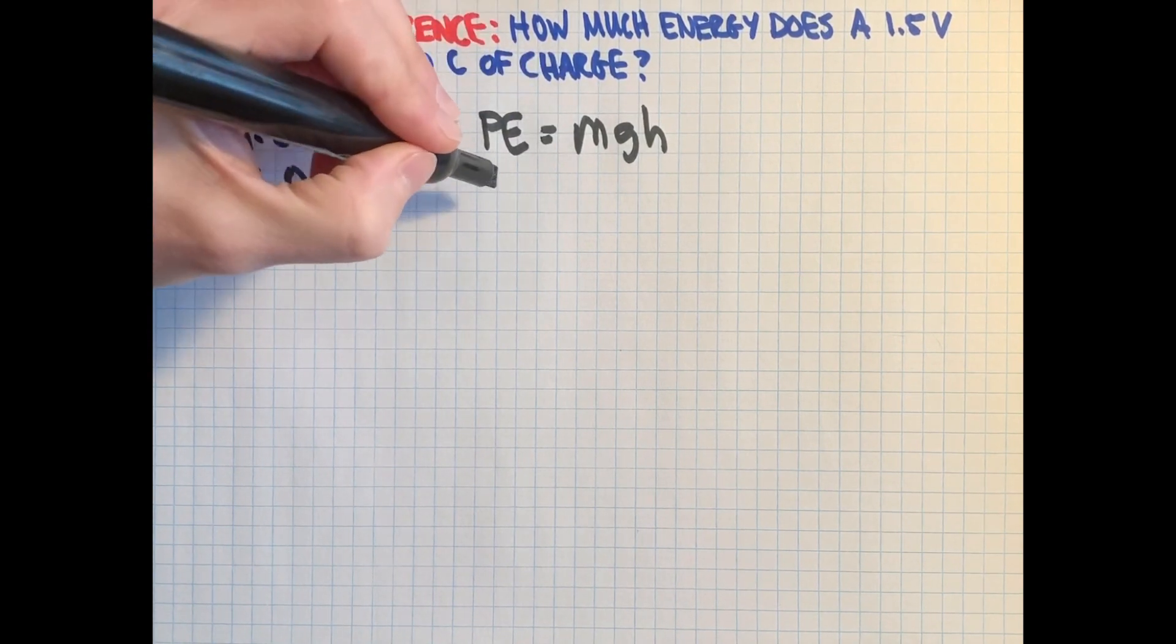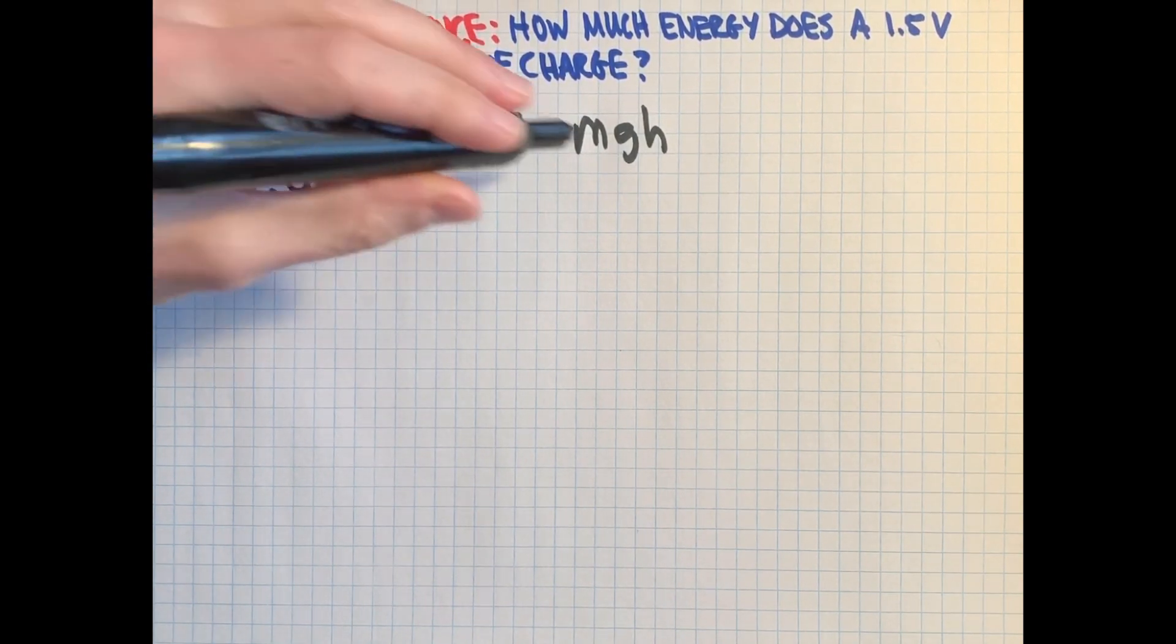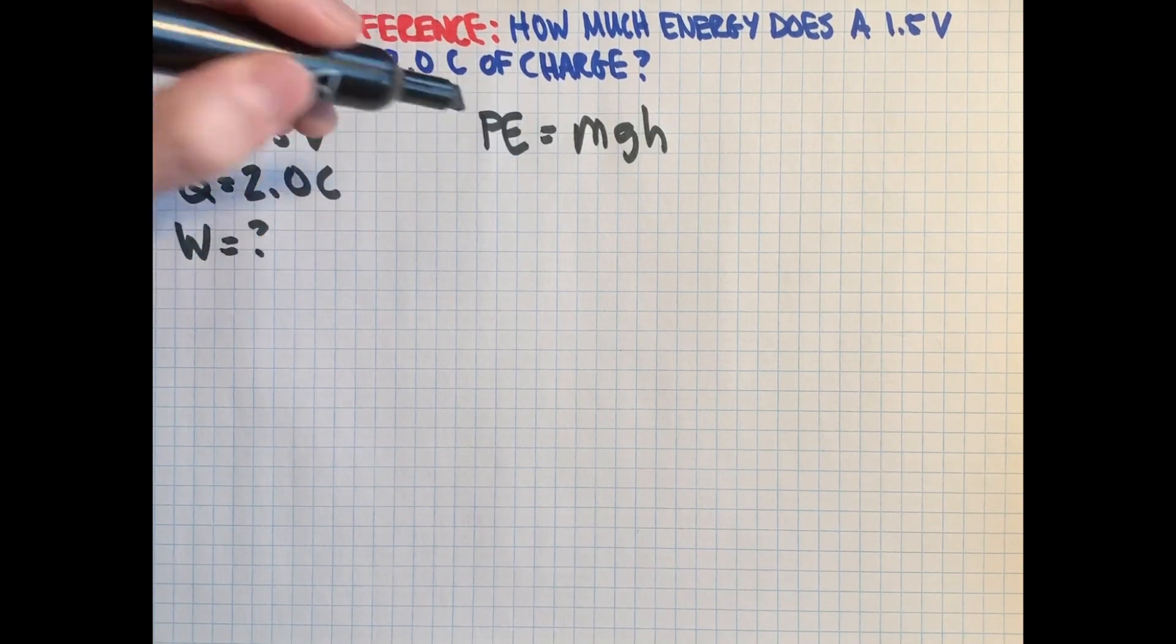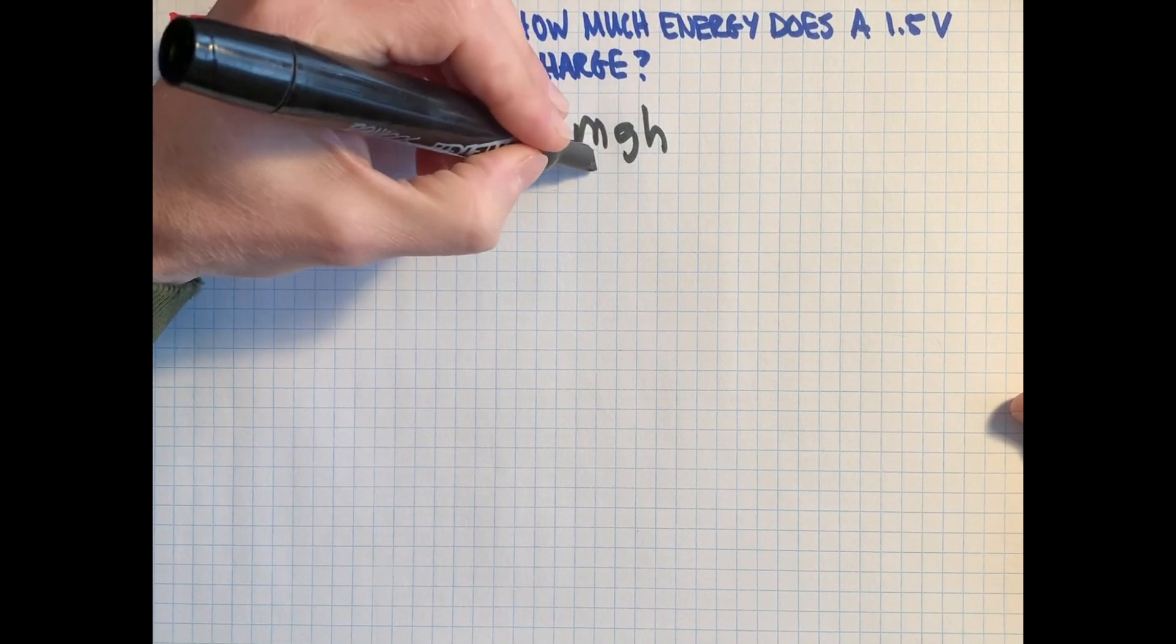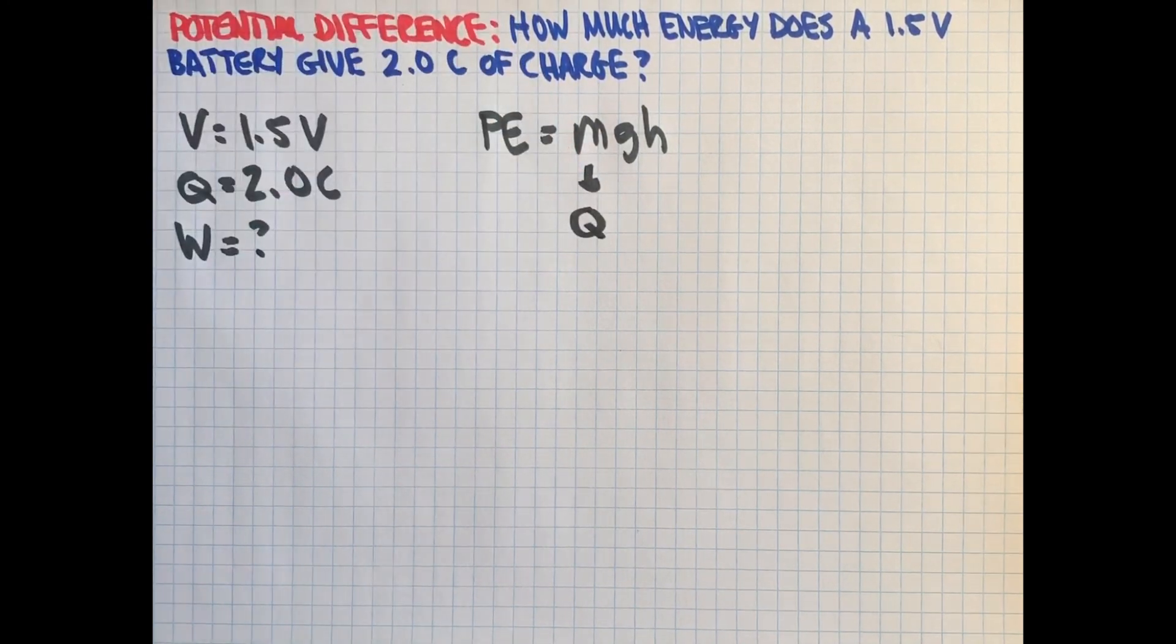Well, in the case of the work that a boulder at some height could do, we calculate it this way. And so for a charge, it is the Q that takes the place of mass in our electrostatics study here.